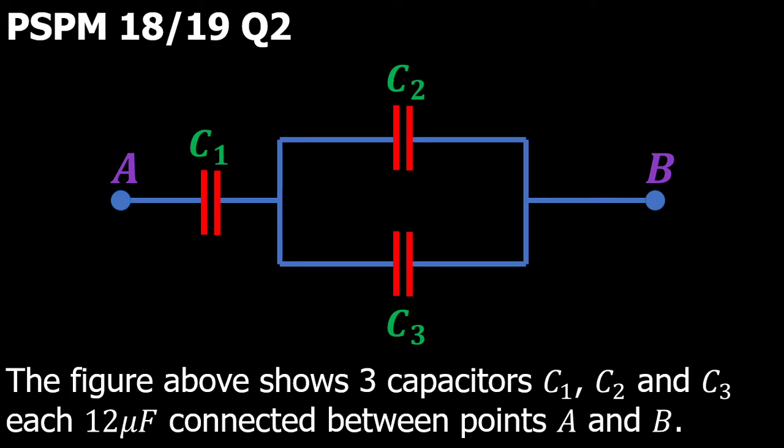As you can see from the figure, it shows that it has three capacitors. C2 and C3 are in parallel, and then C1 is in series with C2 and C3. Each of them has 12 microfarads as their capacitance, and then there's point A and point B.